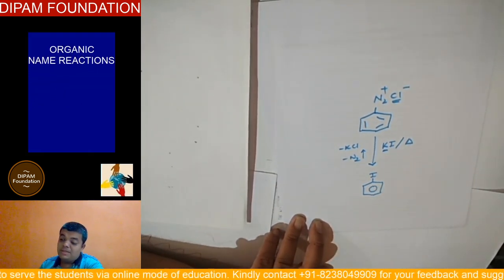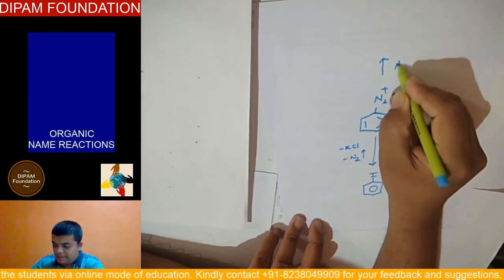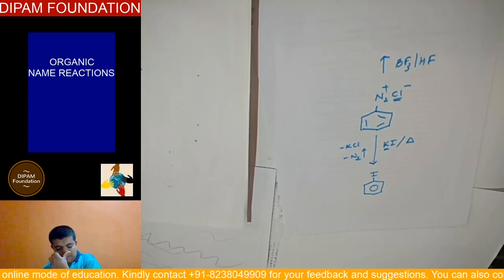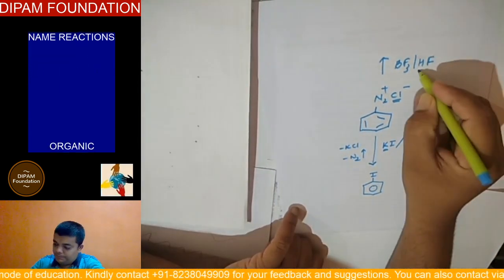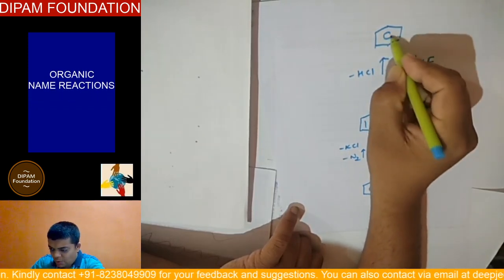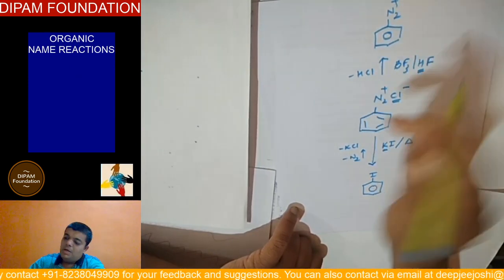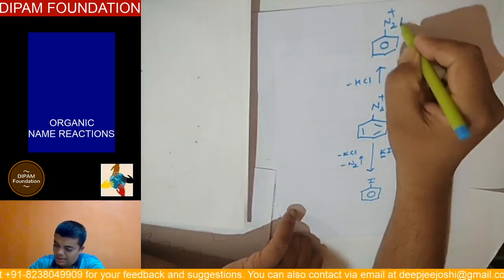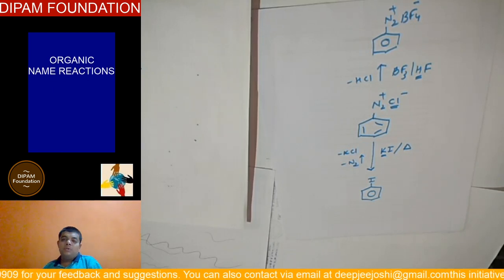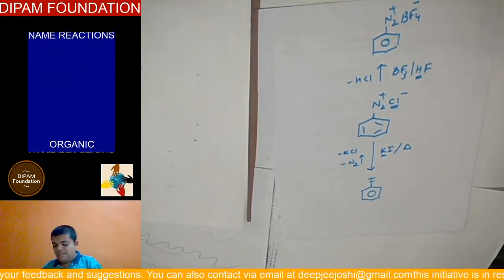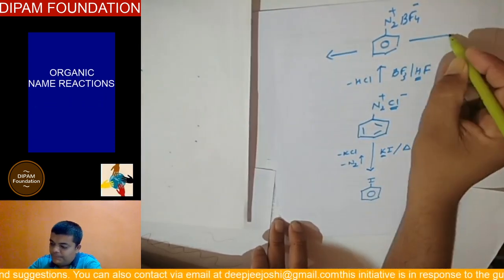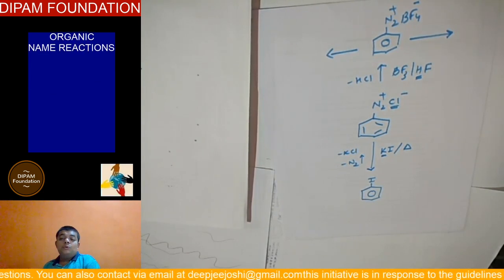On the very opposite side, if I try to react by fluoroboric acid and hydrogen fluoride, HCl will be removed. But at the same time a different kind of a salt will form. N2 plus remains as such intact, BF4 minus is popularly known as benzene diazonium fluoroborate. It is popularly known as benzene diazonium fluoroborate.